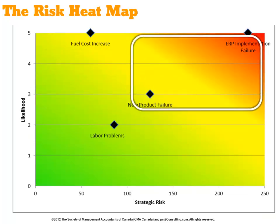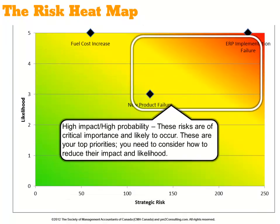On the other hand, the top right-hand corner — high impact and high probability — these are the risks of critical importance to leadership, the board, and your stakeholders, because they're going to have a high impact and are very likely to occur. These must be your top priorities. You need to consider how to reduce their impact, as well as how you might be able to reduce their likelihood.